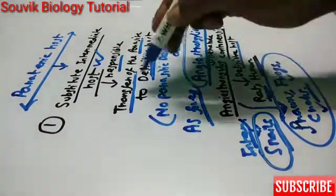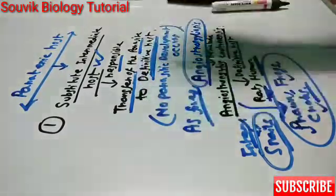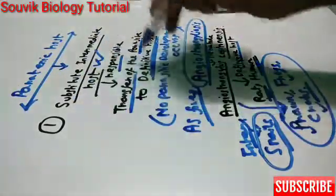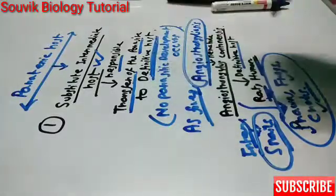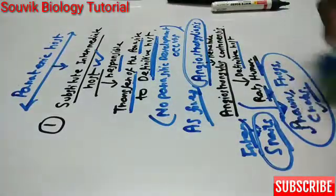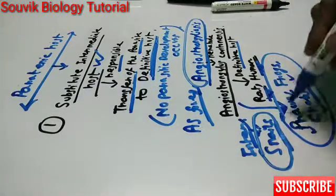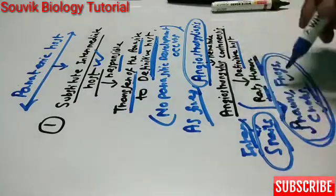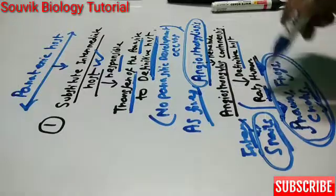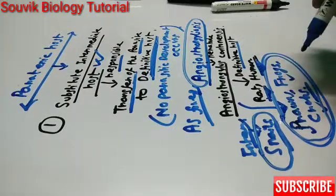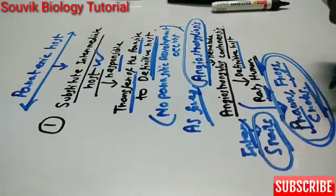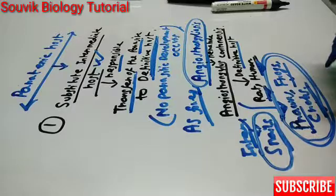As I mentioned, the paratenic host is a substitute intermediate host responsible for the transfer of the parasite to the definitive host. Here, prawns, frogs, and crabs are the substitute intermediate hosts responsible for transferring the parasite to human or rat, which are the definitive hosts. These are known as the paratenic host. I hope this video is helpful. Thank you very much.